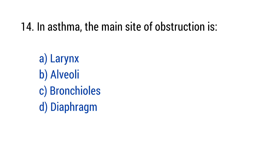Question number fourteen. In asthma, the main site of obstruction is? The right answer is option C: bronchioles.